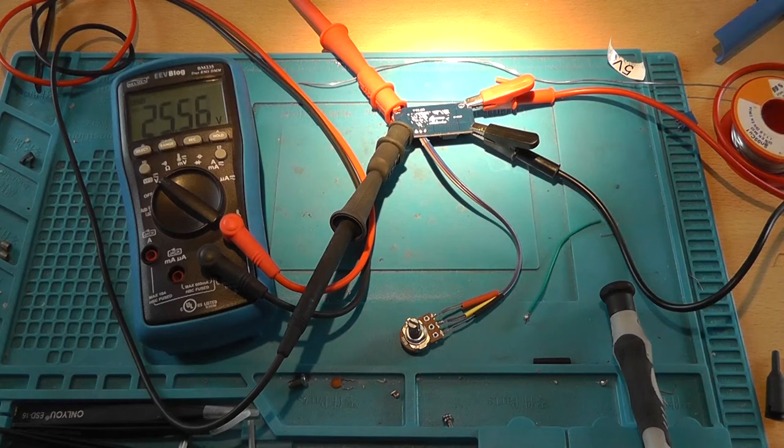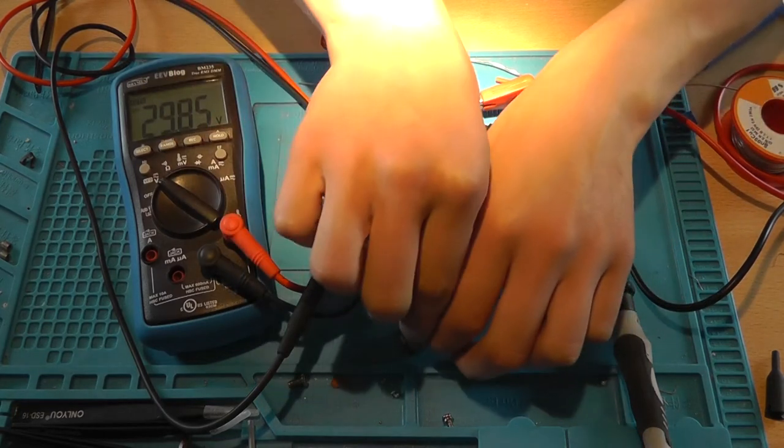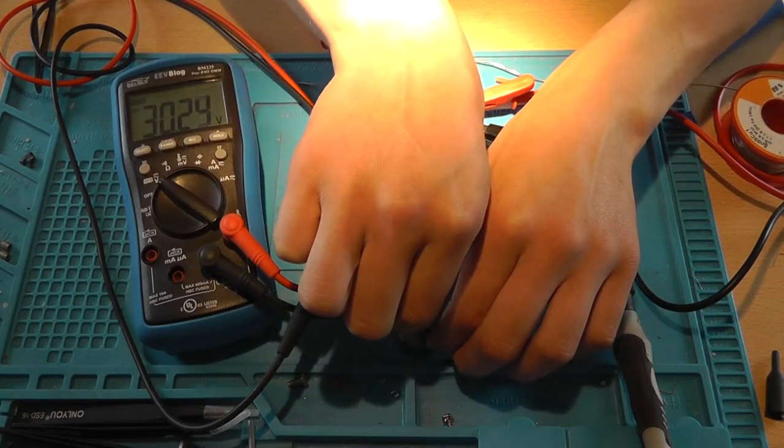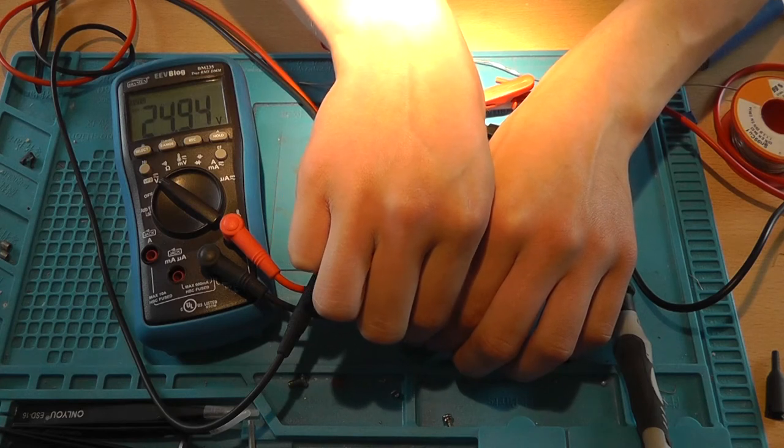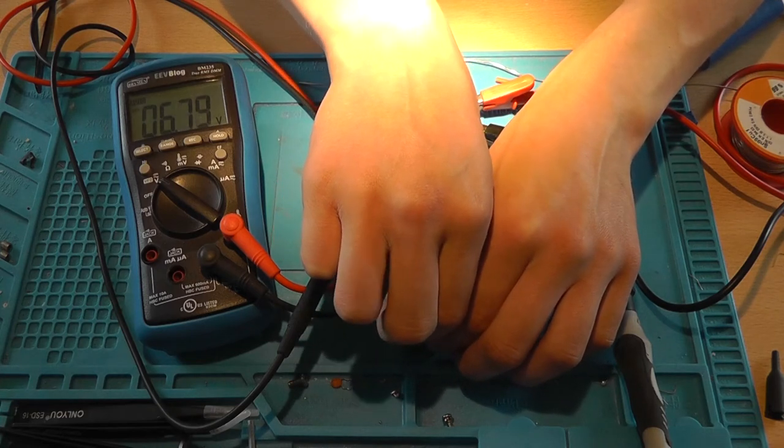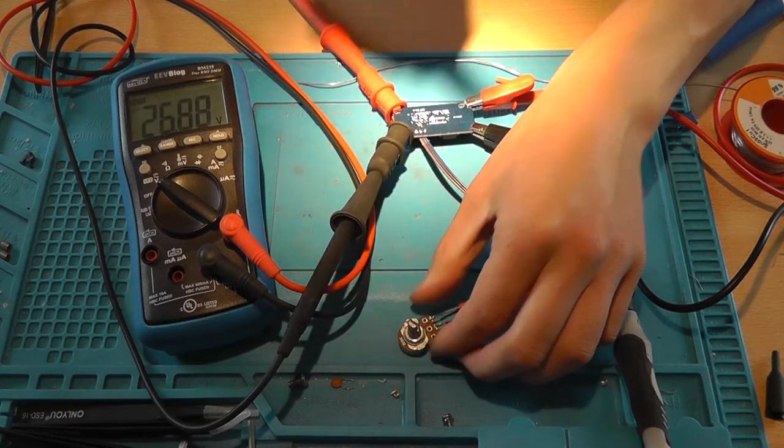Before you put the heat shrink on and actually shrink it, you should give it a test to verify that the pot meter is actually functioning and that the voltage is actually getting adjusted.